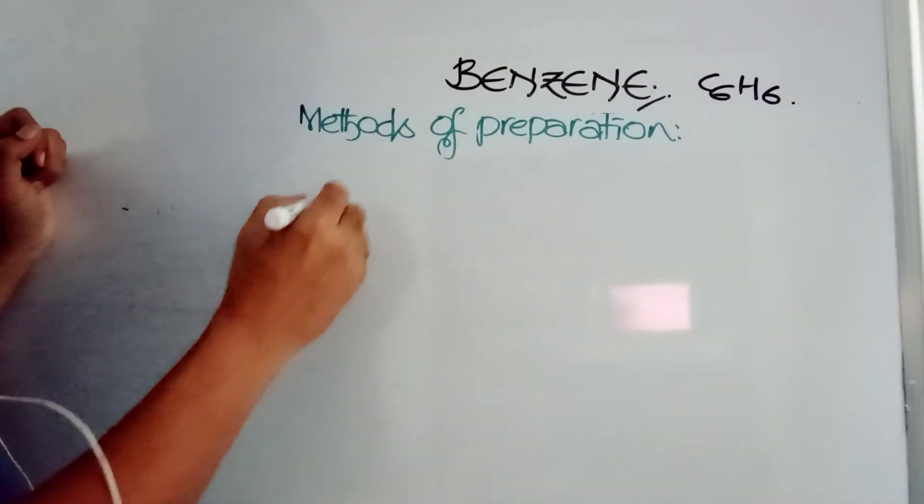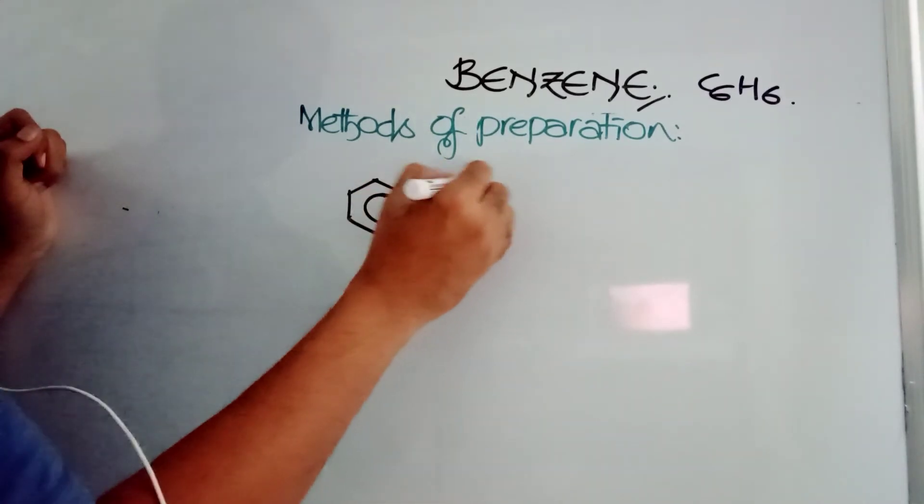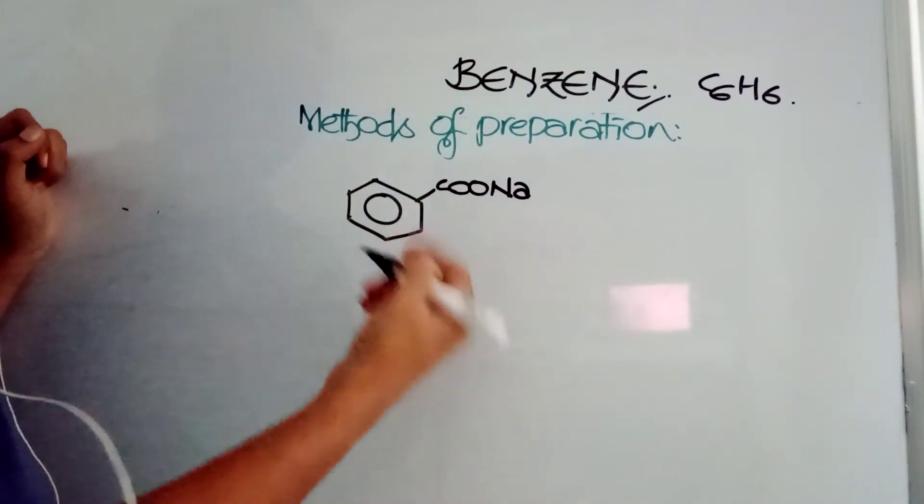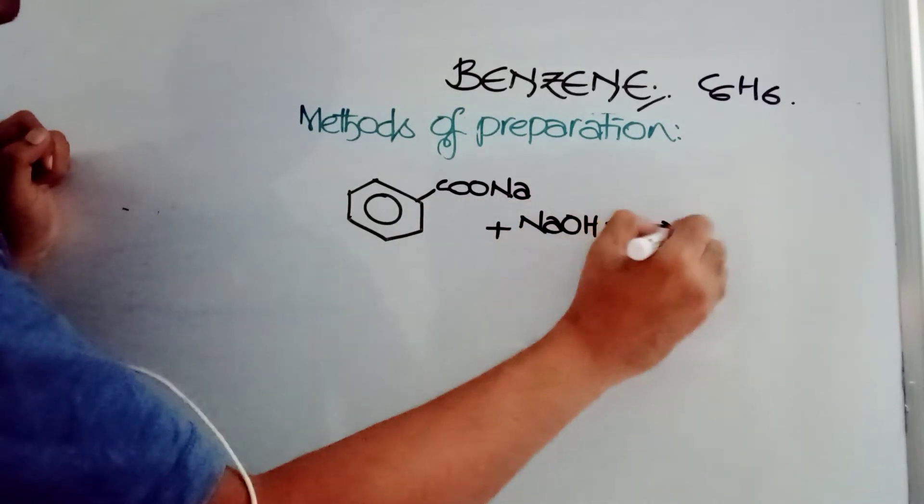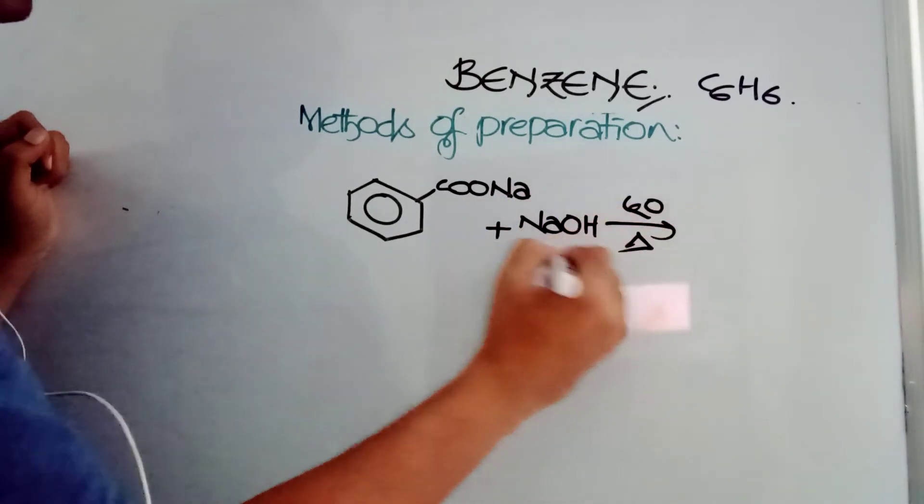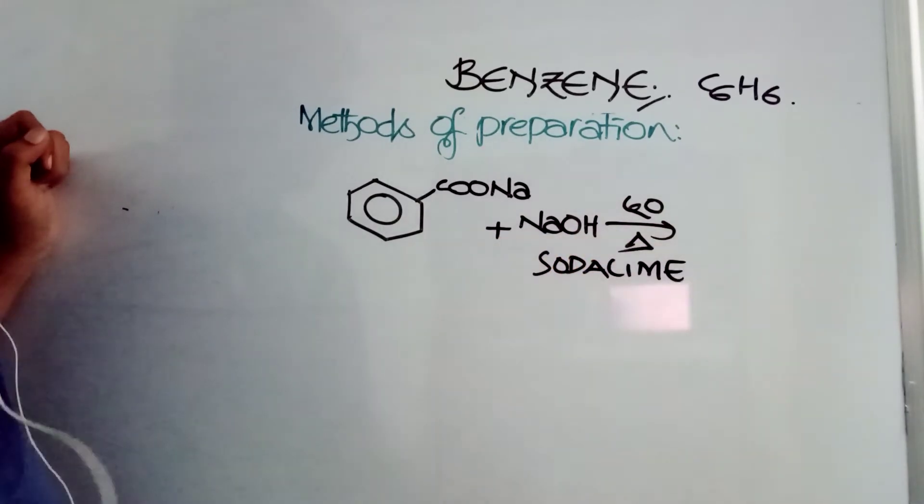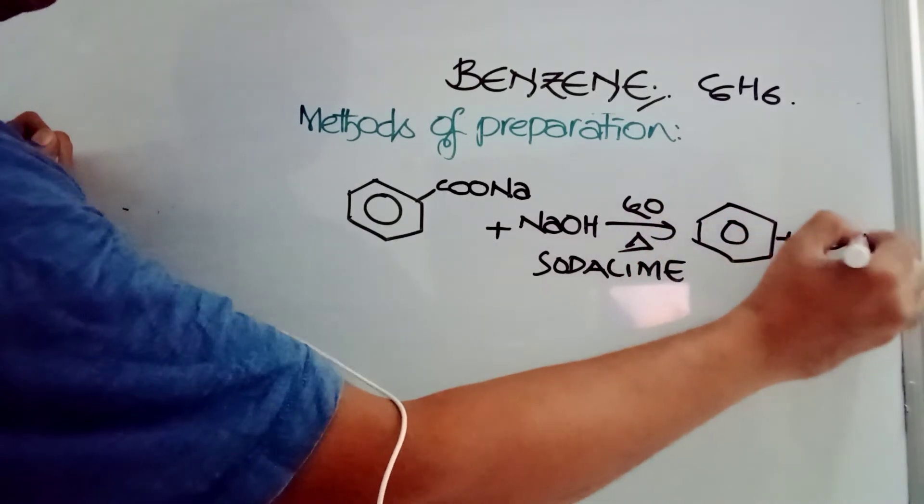The first method of preparation is decarboxylation. Take benzene C-O-O-N-A, sodium benzoate. Sodium benzoate is this compound when treated with NaOH and CaO. This combination we call soda lime.